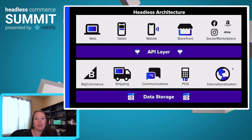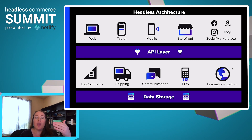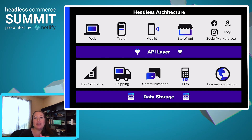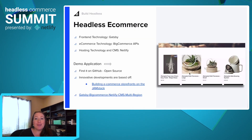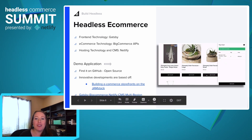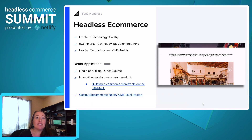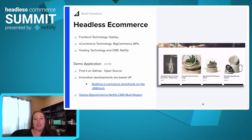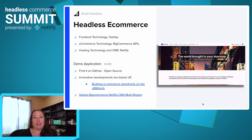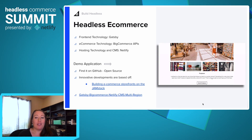This is a basic headless architecture diagram for anyone who isn't familiar with how this works. We have a web technology using Gatsby hooked up to the BigCommerce backend, and you can see this could be extended to be tablet and mobile friendly, as well as include other APIs in your API layer. Here is our demo app — it uses the Gatsby frontend, BigCommerce's APIs for e-commerce, and Netlify for hosting.